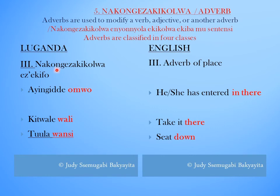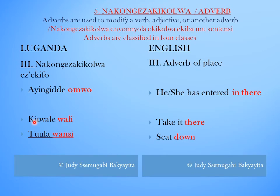The third classification is Nakongeza chikolwa eze echi fo — Adverb of place. For example: Aingide omo — He or she has entered in there. Chitwale wali — Take it there. Tula wansi — Sit down.